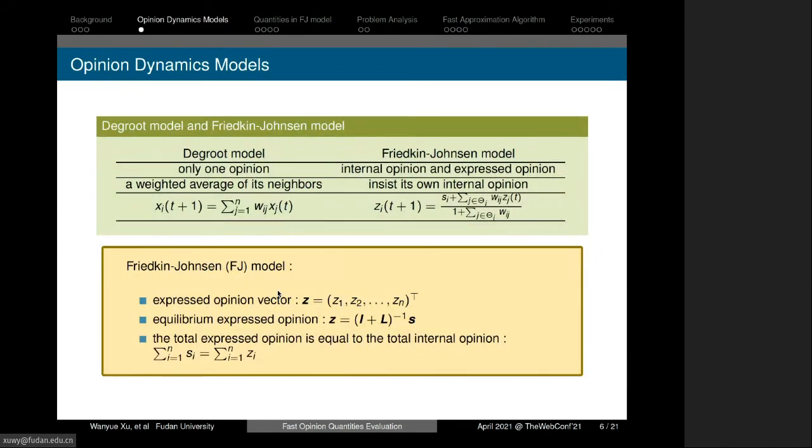We investigate the expressed opinion of the whole at equilibrium. Z is the expressed opinion vector, and we find that the equilibrium expressed opinion for every node is determined by the forest matrix. Since the forest matrix is doubly stochastic, the total expressed opinion equals the total internal opinion, although the expressed opinion in equilibrium for a single node may differ from its internal opinion.